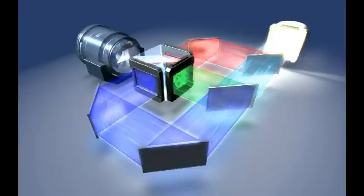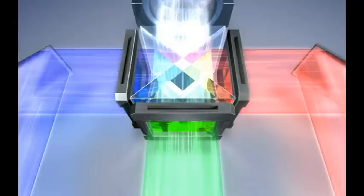The second dichroic mirror divides green and blue, completing the separation of three beams of light. The three beams are then directed towards the three dedicated LCD chips. After the light has permeated the LCDs, the colors are recombined in the prism to produce rich, colorful images which are then projected by the lens.